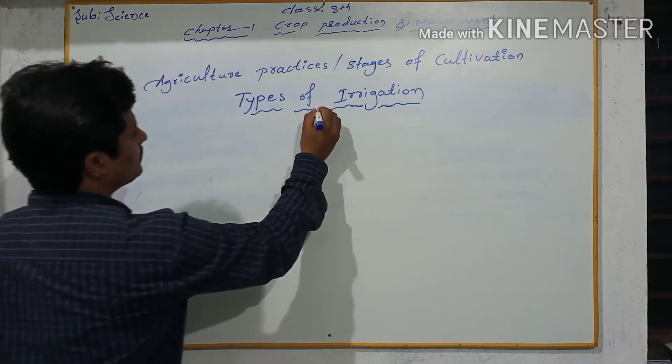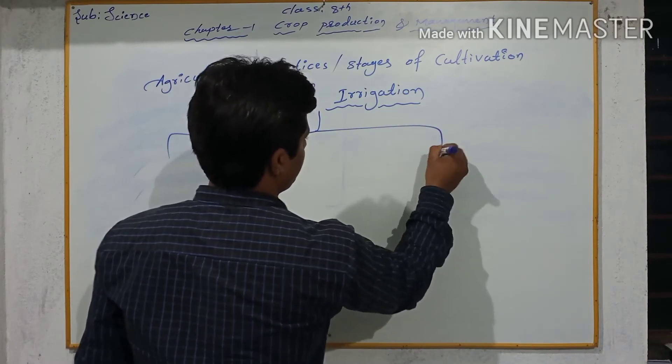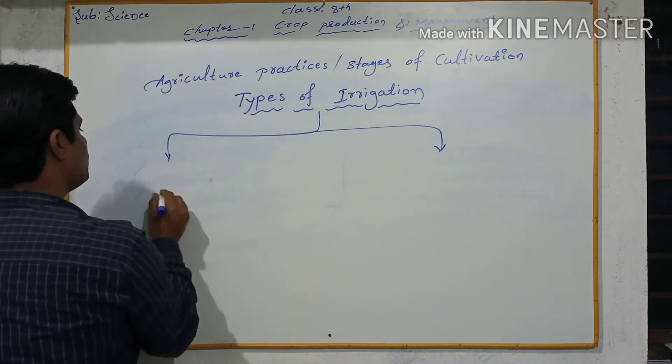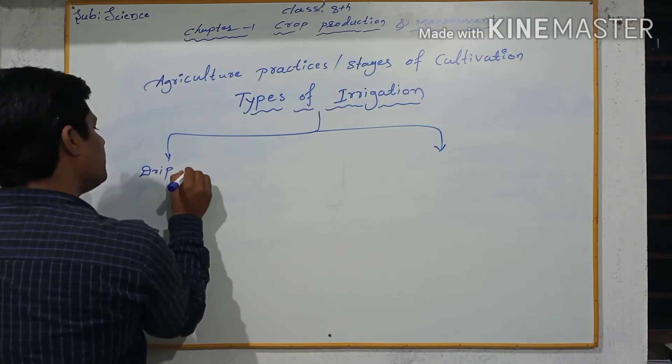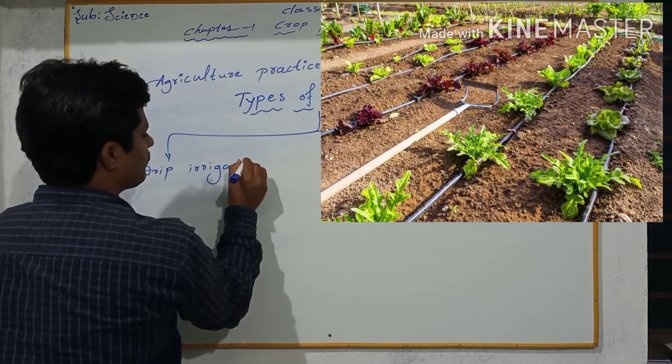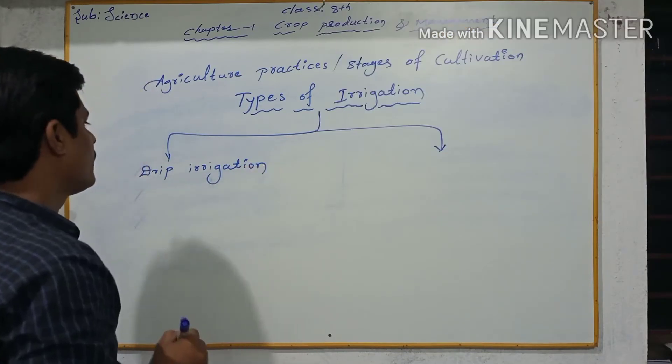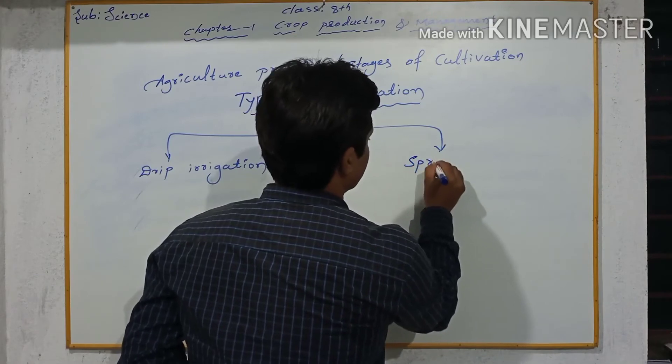There are two types of irrigation. Number one, drip irrigation. Number two, sprinkler irrigation.